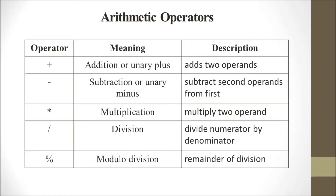Arithmetic operators. The first is the addition or plus operator, also called the unary plus. It adds two operands — meaning two variables, such as A and B. Suppose we store one value in A and a second value in B, this operator works to add the two values of the two operands.